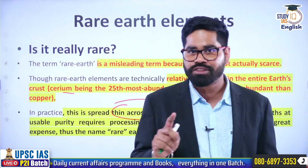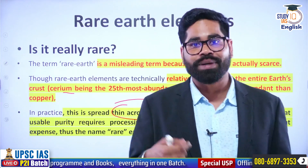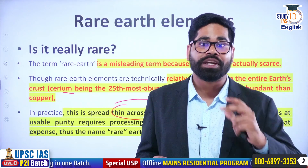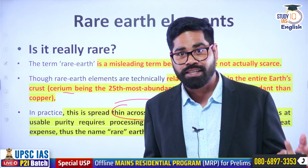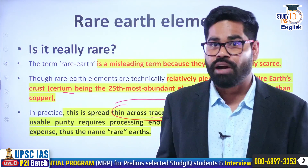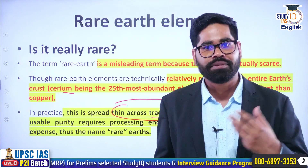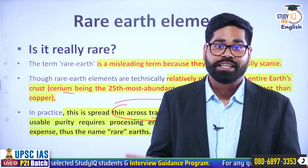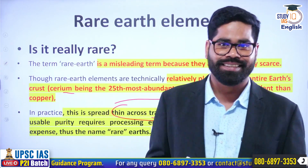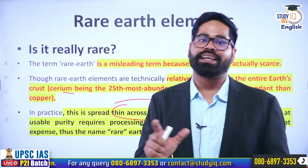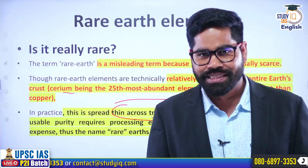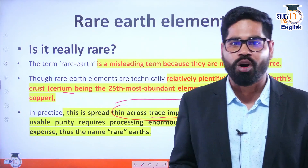Remember, at one point in time, aluminium was one such element that was very difficult to extract. At the time of Napoleon III, it was even used for utensils at royal feasts. Nowadays, giving someone food in aluminium utensils might be seen as disrespectful, but at one point, aluminium was that reputable and difficult to extract, even though it is sufficiently available. The same thing applies to rare earth elements — they are abundant in nature, but their extraction using present technology is still difficult. That is why they have been given the name 'rare earth elements.'